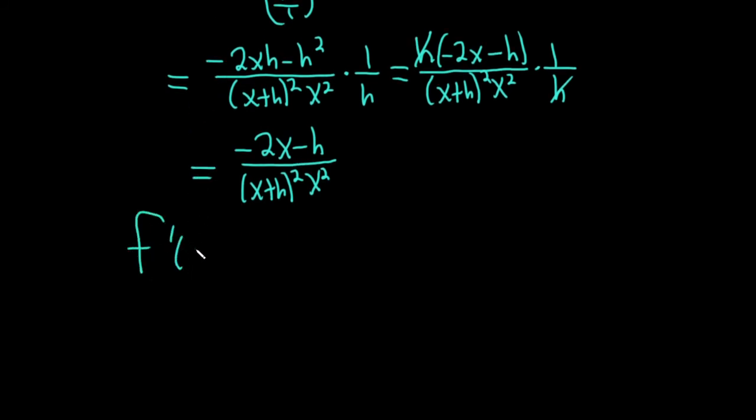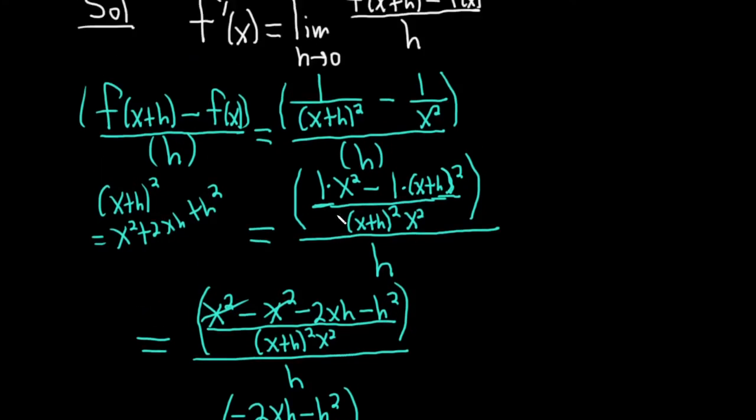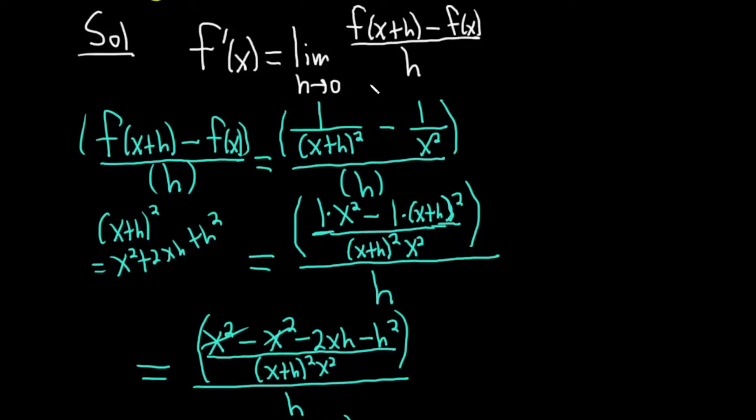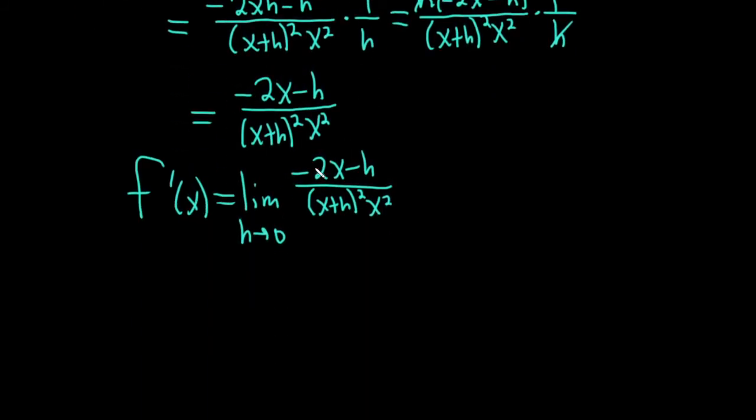So the derivative of f at x is the limit as h approaches 0 of this expression. So this is (-2x - h) / ((x+h)²·x²). At this point, we can plug in the 0 for h, which is something we couldn't do at the beginning. It's worth noting, I forgot to mention it. The reason we had to do all this is because if you take the limit, you can't just plug in 0 because you'll get 0 on the bottom. So you have to go through all of this work just to get rid of the h.